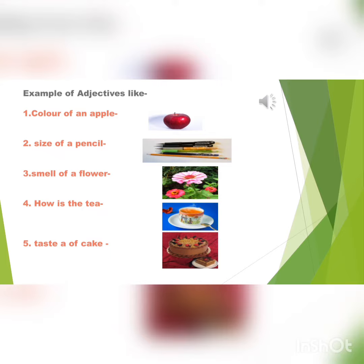Now let's move to the third sentence: smell of a flower. So which type of smell can a flower have? It can be a fresh smell or pleasant smell. So pleasant and fresh are adjectives, and flower is a noun.